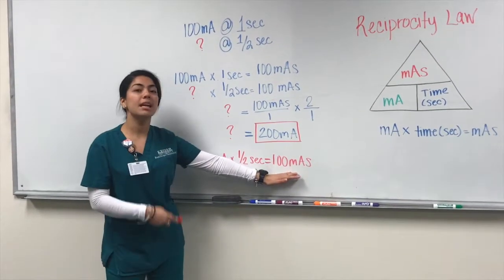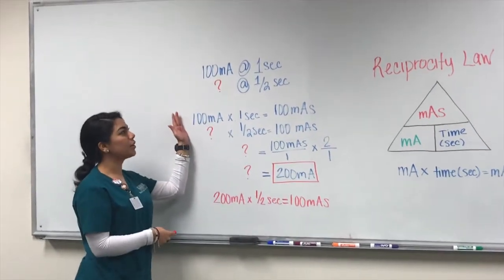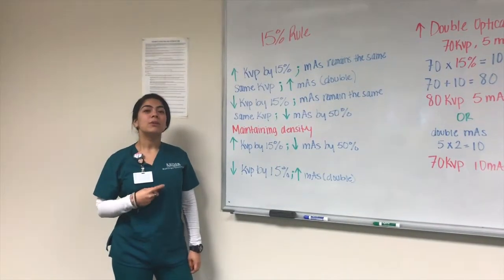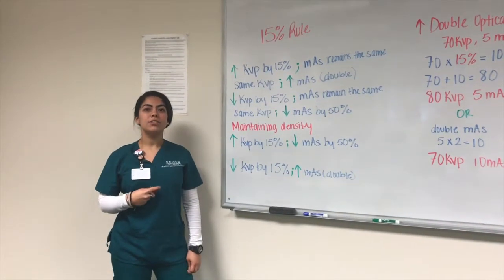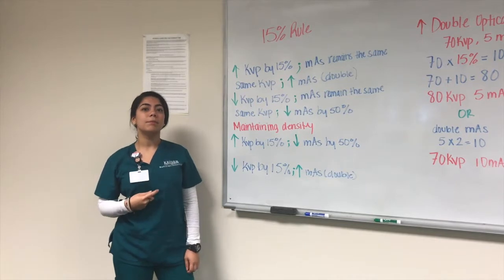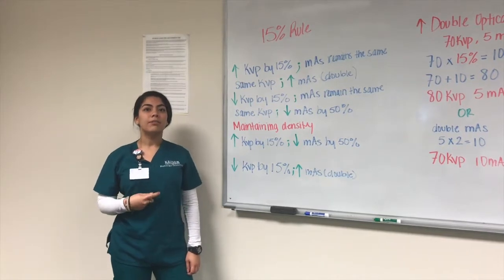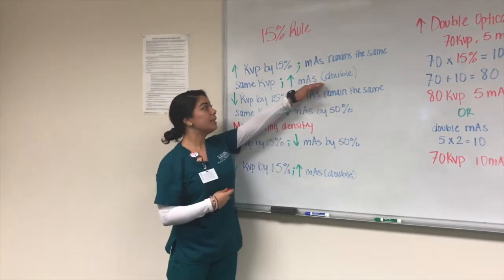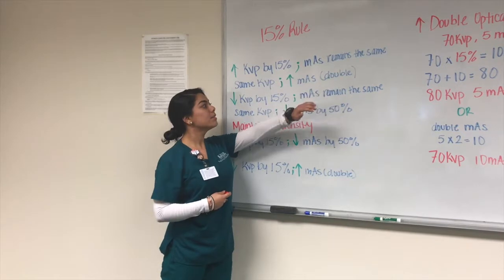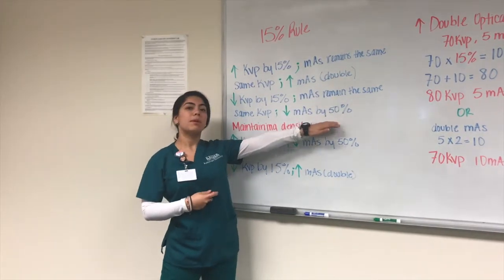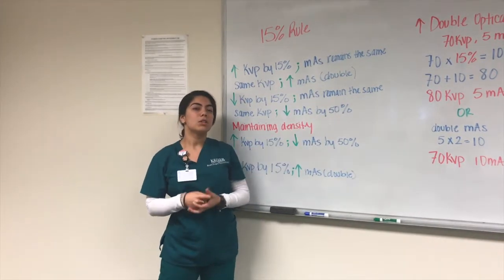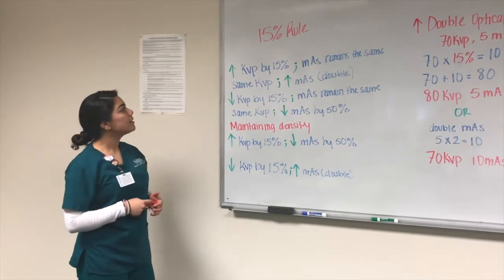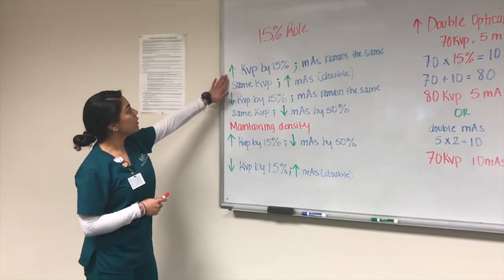The 15% rule states that changing your kVp by 15% will affect radiographic density by either doubling the mAs or reducing your mAs by half. For example, if you want to increase density, you increase your kVp by 15 and the mAs remains the same, or you can keep the same kVp and double your mAs.